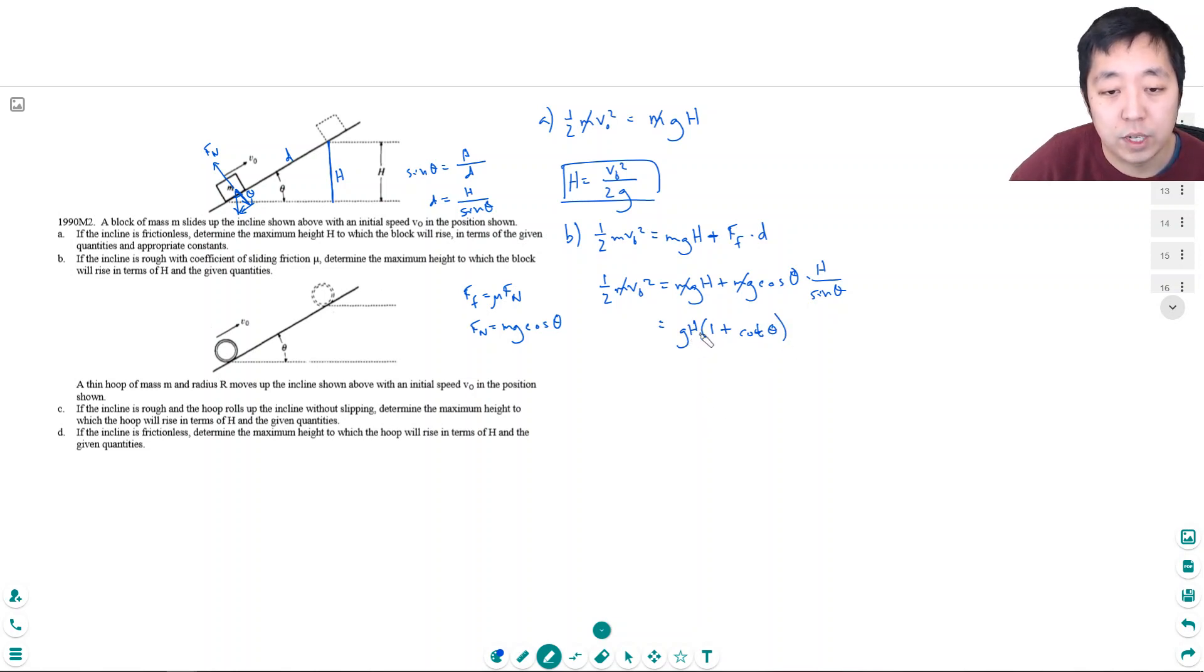Okay, and then I can solve for h, is I divide by g and I divide by 1 plus cotangent theta. Oh wait, no, there's a mu somewhere in here. This should be 1 plus mu cotangent theta. Yeah, okay, is equal to v0 squared over 2g times 1 plus mu cotangent of theta.